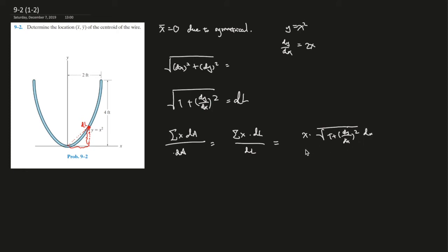And this is dx over here. And over dl, which is 1 plus (dy/dx) squared, and this is dx.